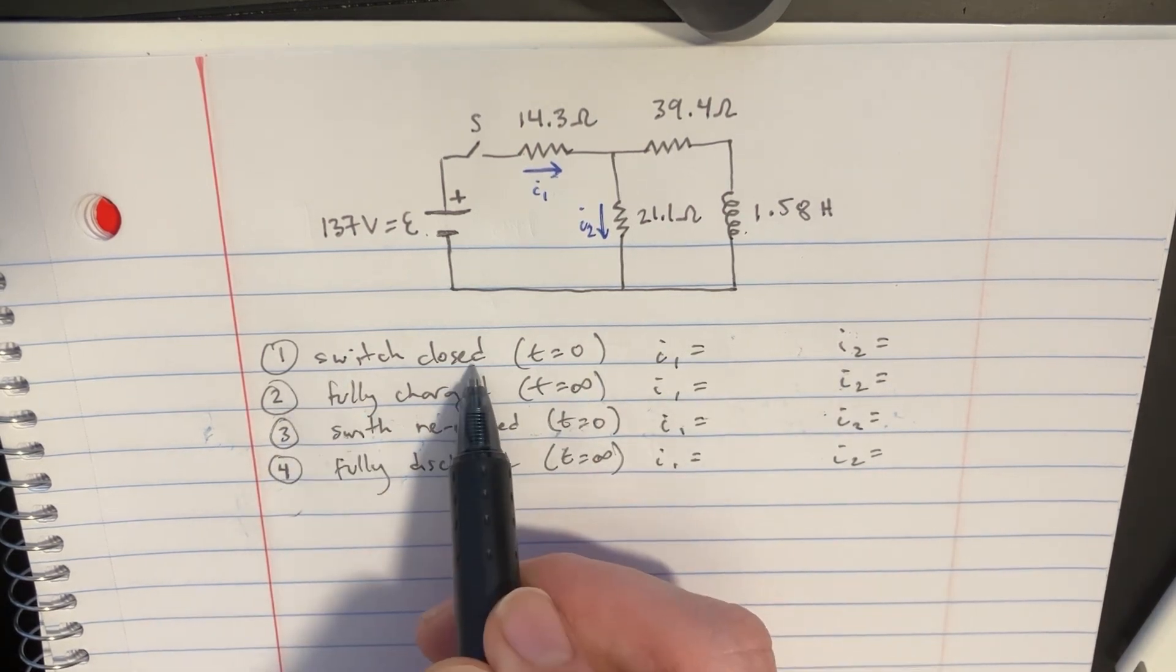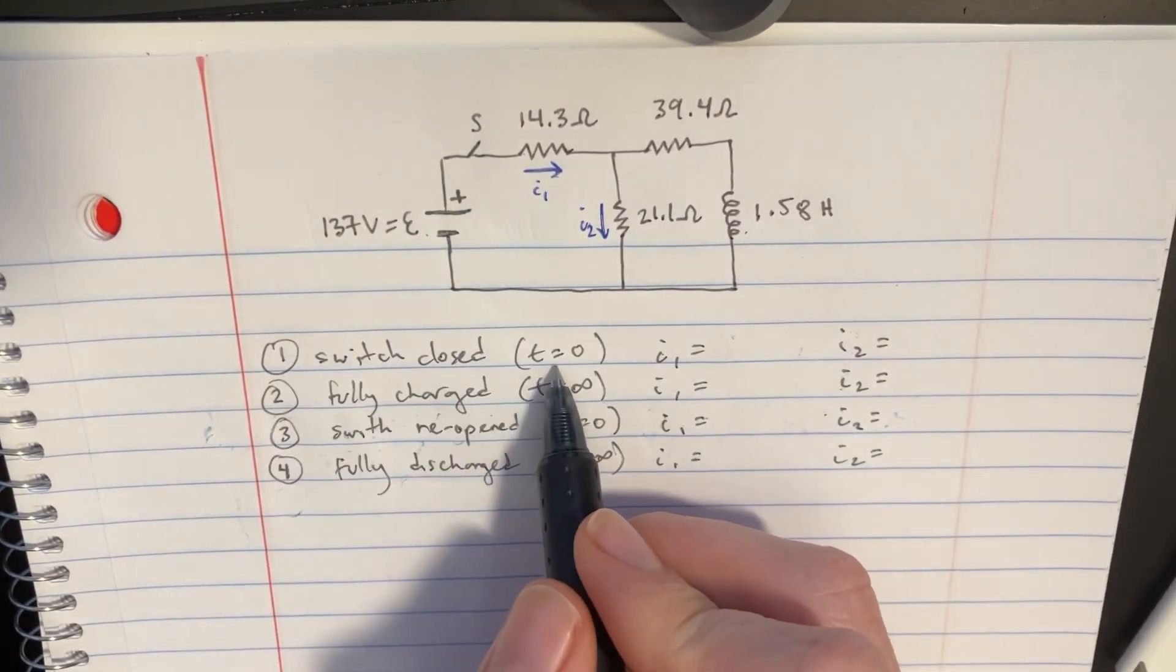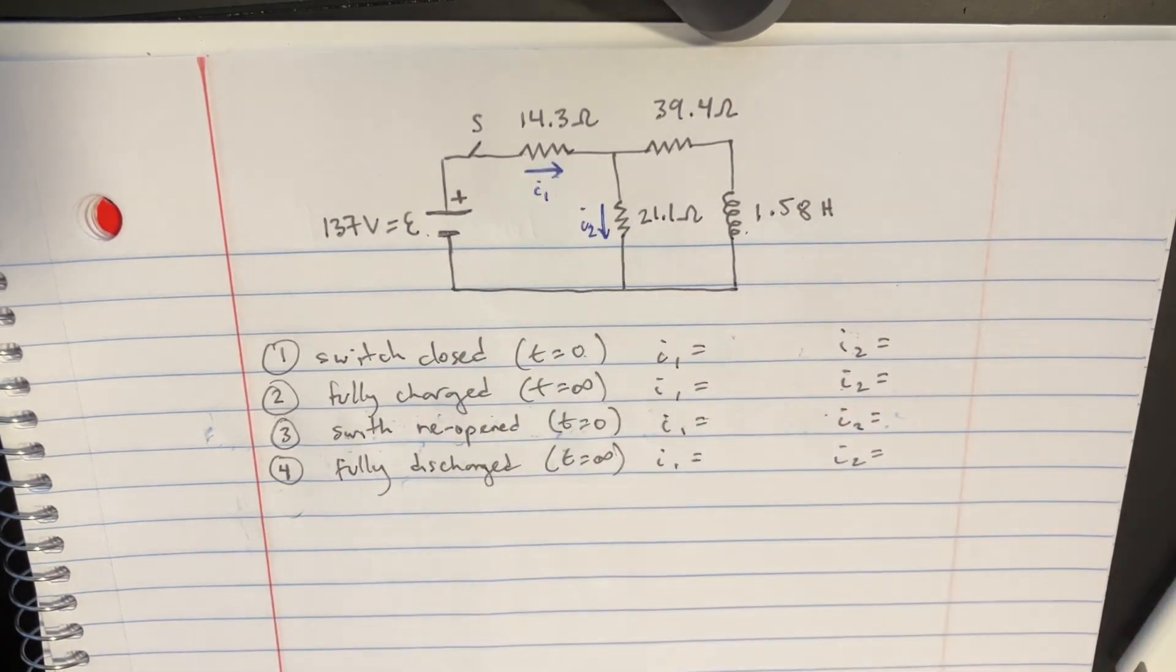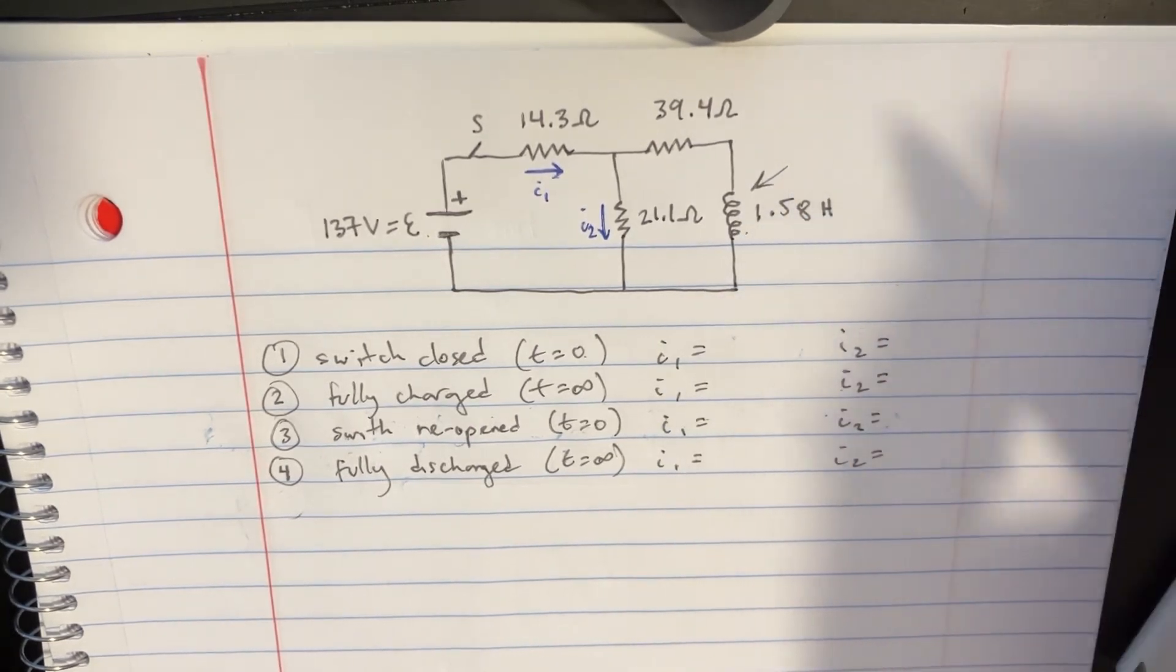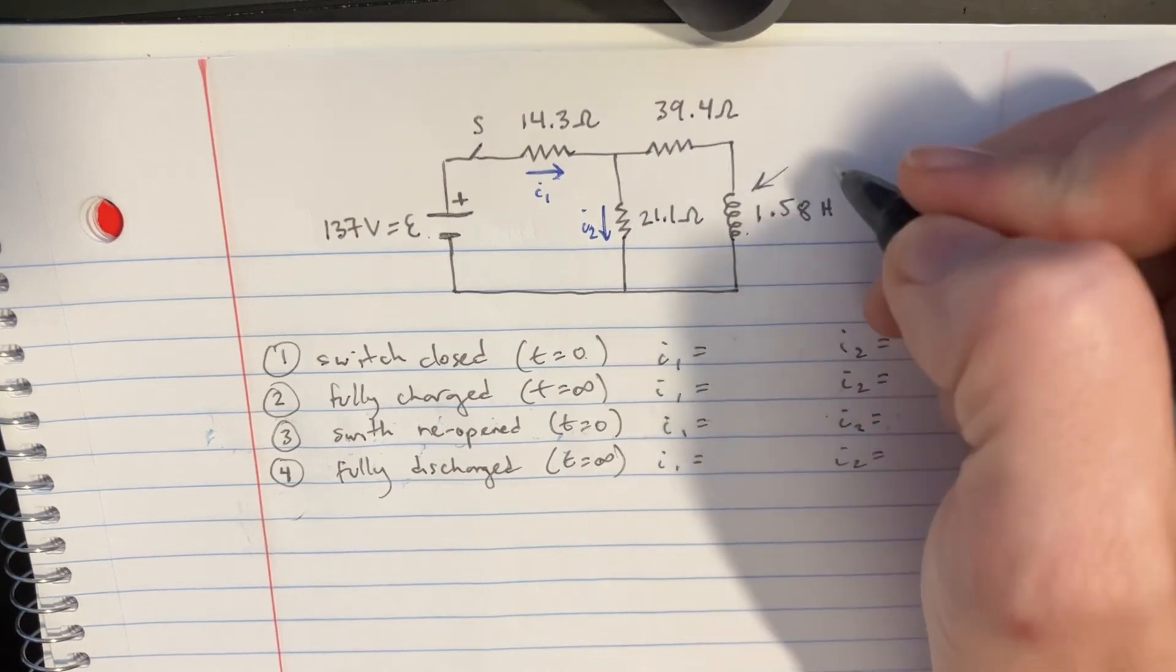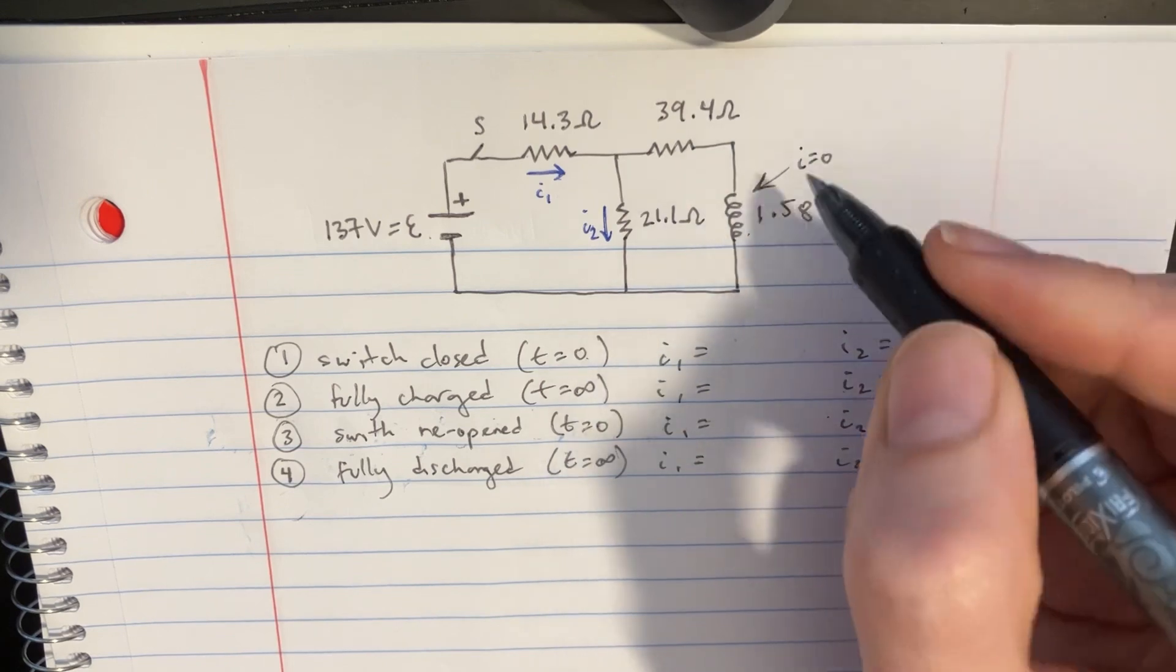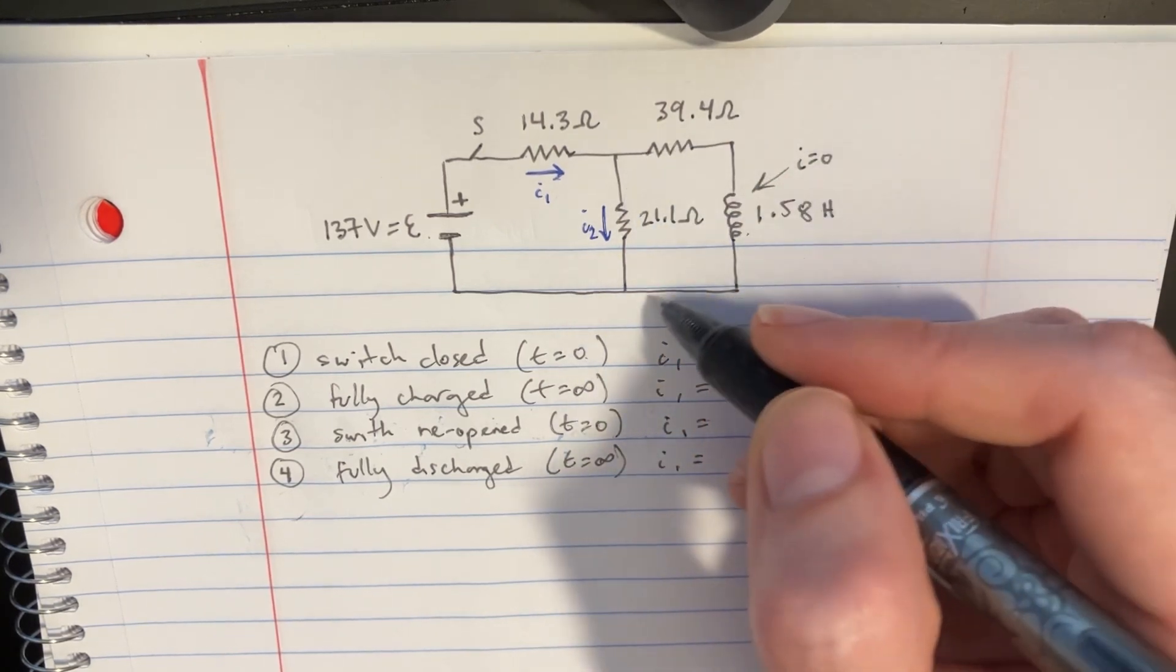At first, we're going to close the switch, disconnect it, and then we're going to see what happens immediately after that, just at time equals zero, for currents I1 and I2. The inductor's job in the beginning is to basically stop the flow of current through there. So the current through the inductor is going to be zero, and because the current in the inductor is zero, that means that the current here is also zero.